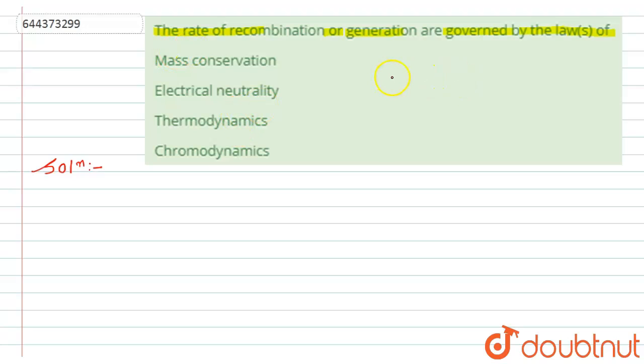So as we know that the rate of recombination and generation actually is governed by the mass conservation law. Okay, that is option number first will be correct answer. Now let's talk about what is mass conservation law.